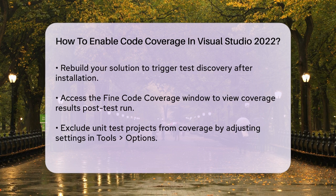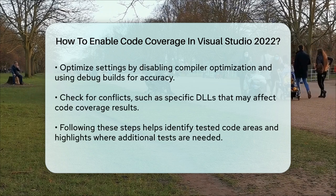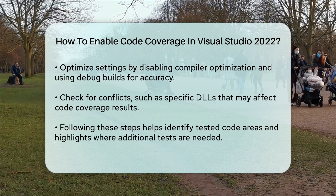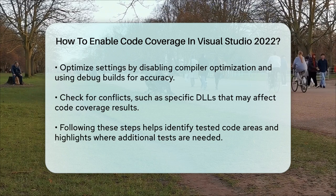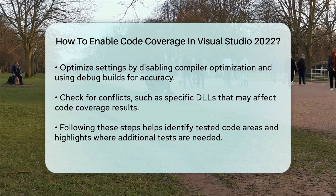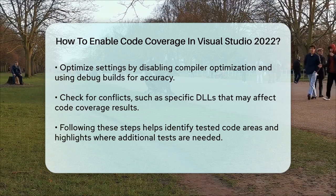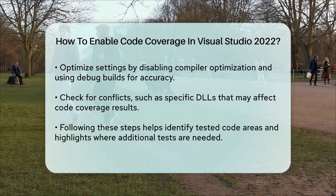Additional tips for both methods: it's helpful to optimize your code coverage settings. Turn off compiler optimization, use debug builds for unmanaged code, and generate PDB files for each assembly. These steps ensure you get accurate and detailed coverage results. If you encounter issues such as not seeing any results, check for potential conflicts like specific DLLs interfering with the code coverage process. For example, the presence of Microsoft.VisualStudio.TraceDataCollector.dll can cause issues in Enterprise Edition.